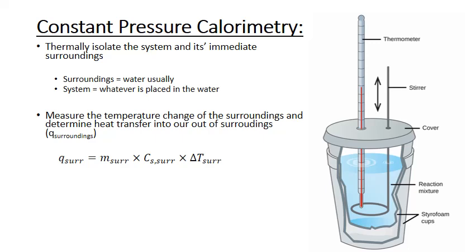So we can use the temperature change of the water to calculate the heat transfer into or out of the surroundings for the reaction. It is simply equal to the mass of the surroundings — the water — times the heat capacity, usually of water, times the temperature change.